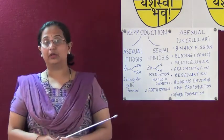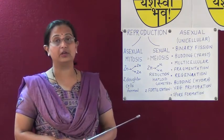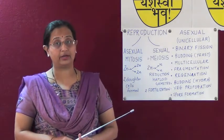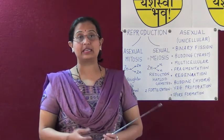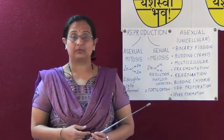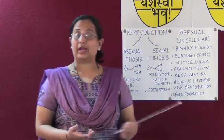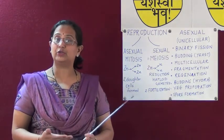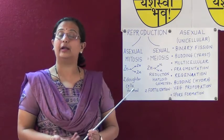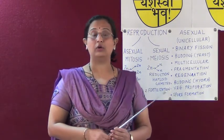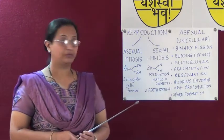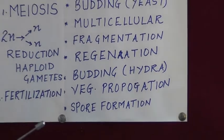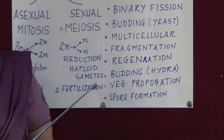Fragmentation is a process observed in spirogyra. The filaments of spirogyra, when they receive water and minerals, multiply and grow. Fragmentation occurs when the filaments break into parts, and each part grows rapidly and multiplies to form a new filament.